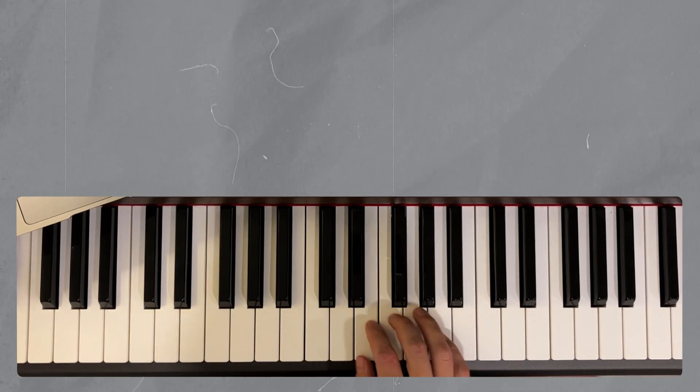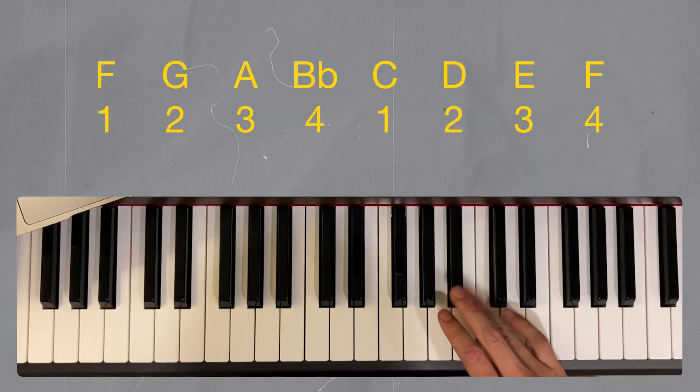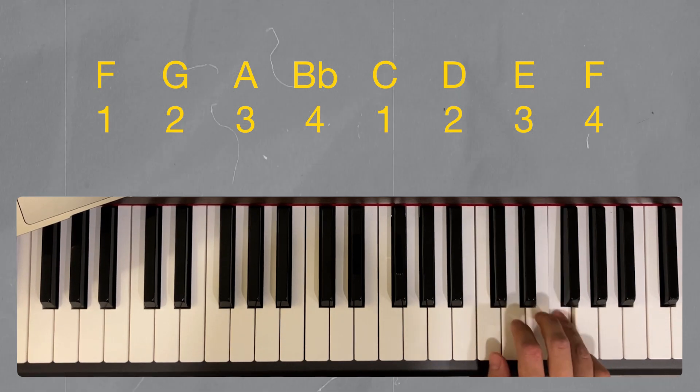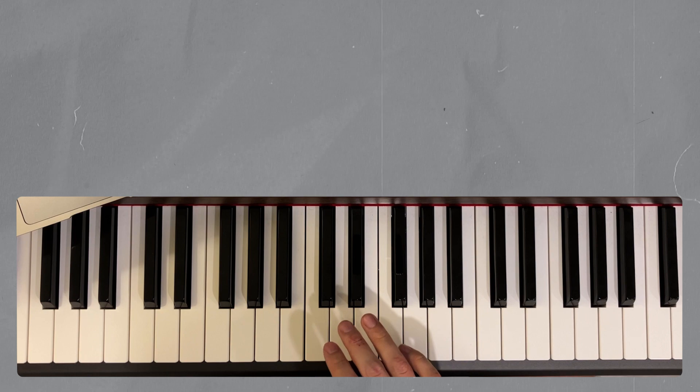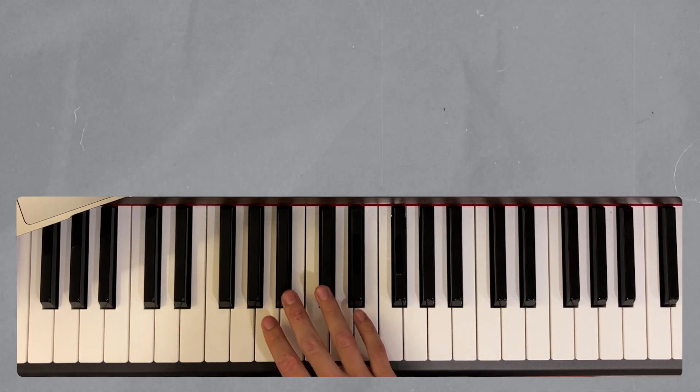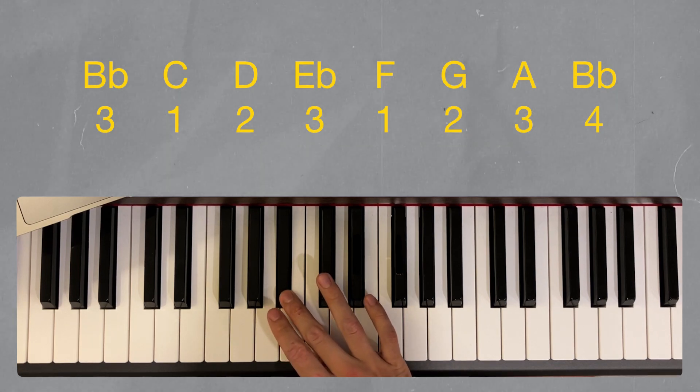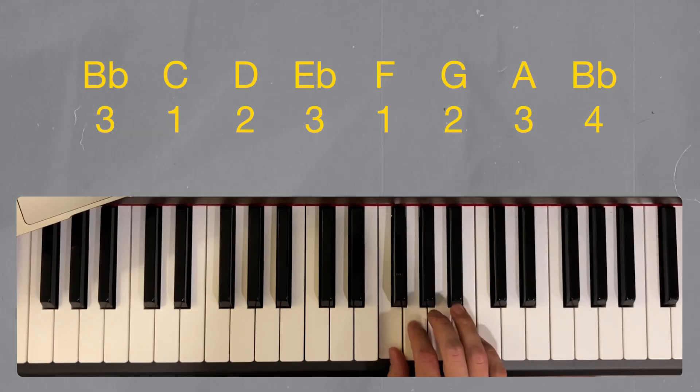For F, I play 1, 2, 3, 4, 1, 2, 3, 4. For B flat, this is where it starts to get a little bit different. I'm starting with 3, 3, 1, 2, 3, 1, 2, 3, 4.